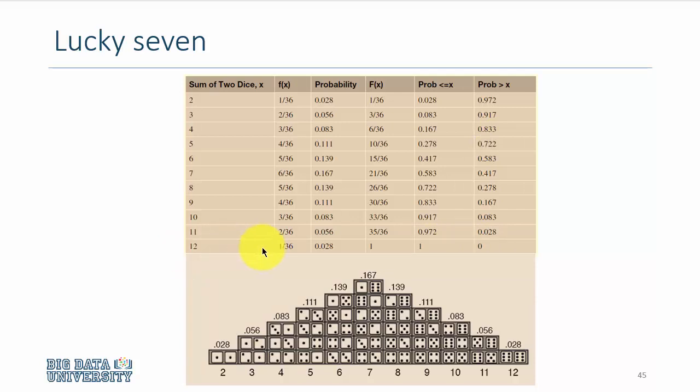The probability sums up to 1, and the probability of getting more than 12 is obviously 0, because the two dice can maximum produce this number. This is a nice way of looking at how a probability distribution space is created by rolling two dice.